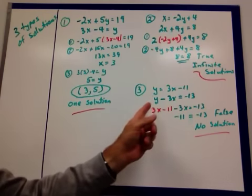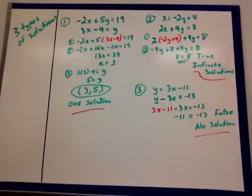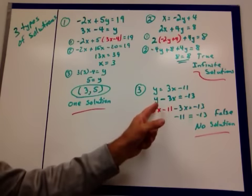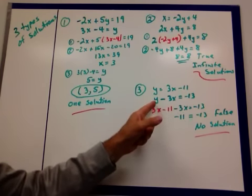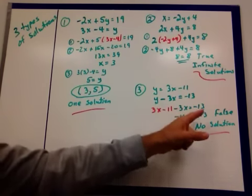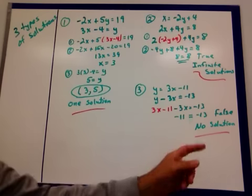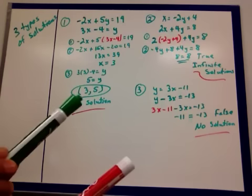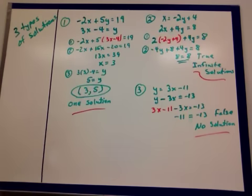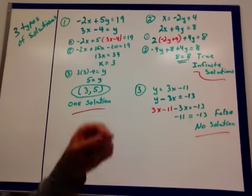Third example. y equals 3x minus 11, y minus 3x equals negative 13. I substitute the 3x minus 11 in for the y here. Minus my 3x equals negative 13. The 3x's cancel out. Negative 11 does not equal negative 13. That's a false statement. So no solution. That's just two parallel lines. They're never going to intersect. So that's what that looks like algebraically.